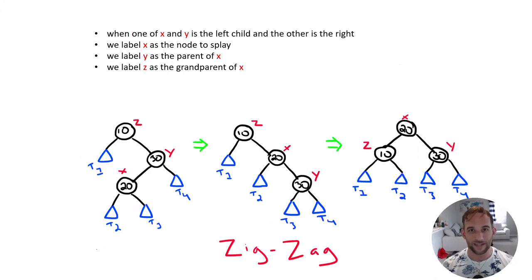The next case is called zigzag. Now, this is when you have x is a left child and y is a right child or vice versa, y is a right child, x is a left child. And so the node that we want to splay in this case is node value 20. We're going to label it x, label its parent y, and then label y's parent as z.